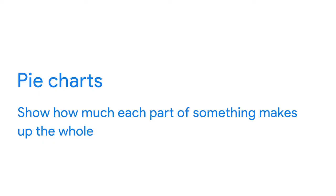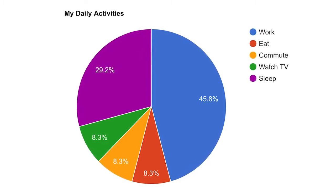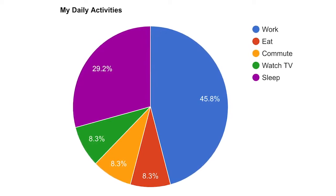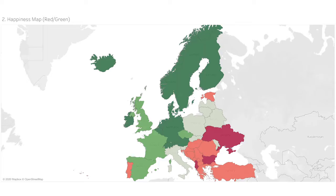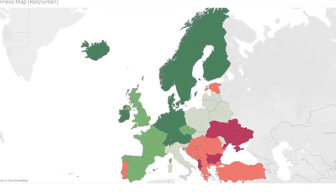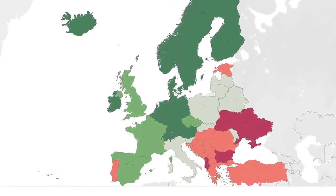Say hello to the pie chart. Pie charts show how much each part of something makes up the whole. This pie chart shows us all the activities that make up someone's day — half of it spent working, shown by the amount of space the blue section takes up. From a quick scan, you can easily tell which activities make up a good chunk of the day and which ones take up less time. Earlier, we learned how maps help organize data geographically. Maps can hold a lot of location-based information and they're easy for your audience to interpret. This example shows survey data about people's happiness in Europe — the border lines are well defined and the colors added make it even easier to tell the countries apart.